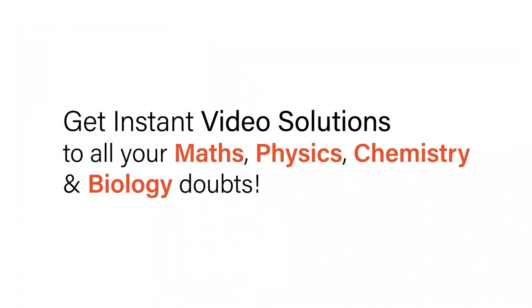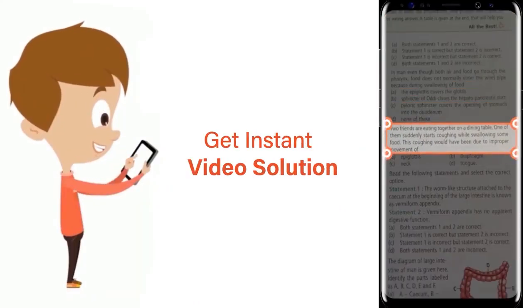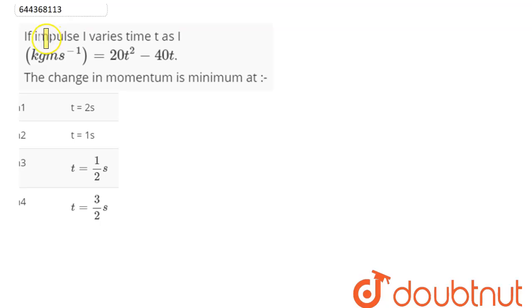With Doubtnet, get instant video solutions to all your math, physics, chemistry, and biology doubts. Just click the image of the question, crop the question, and get instant video solution. Download Doubtnet app today. The question is: impulse I varies with time t as I = 20t² - 40t.